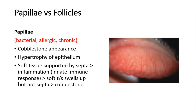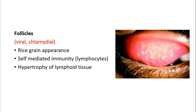Papillae versus follicles — follicles will be mentioned in viral conjunctivitis. It is important to differentiate these two to determine the cause, whether it's bacterial or viral. Bacteria is more associated with papillae, which show a cobblestone appearance due to hypertrophy of the epithelium. There is soft tissue supported by septa, and when there is inflammation — in bacterial cases it's an innate immune response — the soft tissue swells up but the septa remains the same, causing the cobblestone appearance. The causes of papillae are bacterial conjunctivitis, allergic, or chronic conjunctivitis. In viral cause, there will not be papillae; there will be follicles.